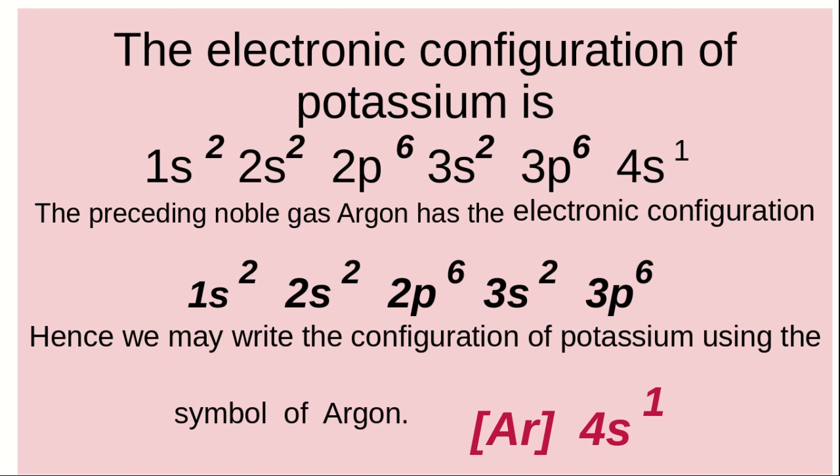For example, the electronic configuration of potassium is 1S2, 2S2, 2P6, 3S2, 3P6, and 4S1. The preceding noble gas, argon, has the electronic configuration 1S2, 2S2, 2P6, 3S2, and 3P6. Hence we may write the configuration of potassium as [Ar] 4S1.